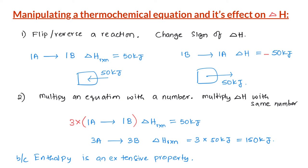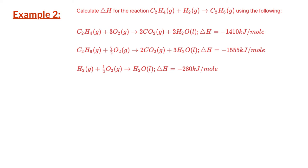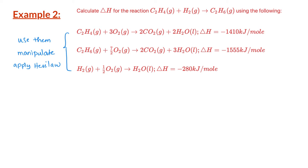Let us now look at an example in which we have to further manipulate the given equations before applying Hess's law. This is a typical exam question: calculate the enthalpy change for the reaction using the following equations. We need to use the 3 reactions given, manipulate them, and add them up to get the required reaction. There are 2 things we will focus on: the reactants and products of the required reaction, and the coefficients of the required reaction.